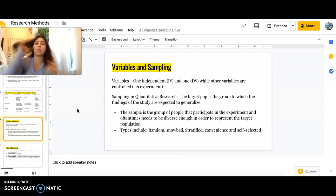And then, some types of sampling include random, snowball, stratified, convenience, and self-selected.